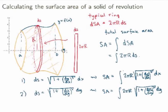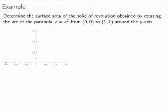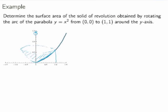Let me do an example to clarify. Determine the surface area of the solid of revolution obtained by rotating the arc of the parabola y = x² from 0 to 1 around the y-axis. The parabola looks like this, and I'm only considering it between 0 and 1. Rotating around the y-axis gives a solid like this, and I want to calculate its surface area. I could do this in terms of x-coordinates or y-coordinates. I'll do it in terms of x here, and in class we'll do it the other way and verify we get the same answer.